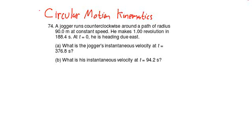So here we have a situation where a jogger is running around a circular path, and we're given some information about the path that they're running on, the radius of that, and here we've got some information about the time that it takes, and we're given some information about the initial position of the jogger.